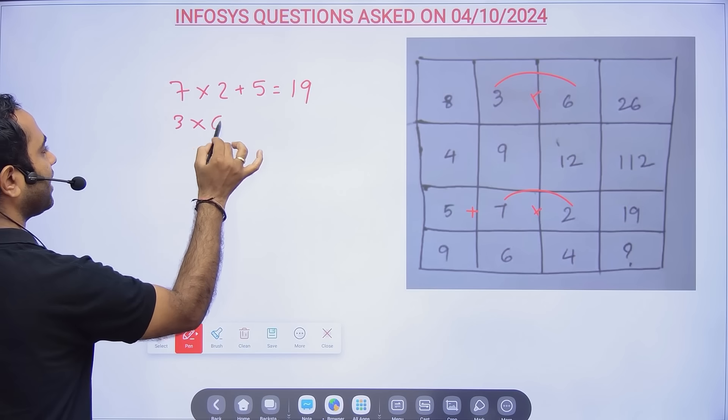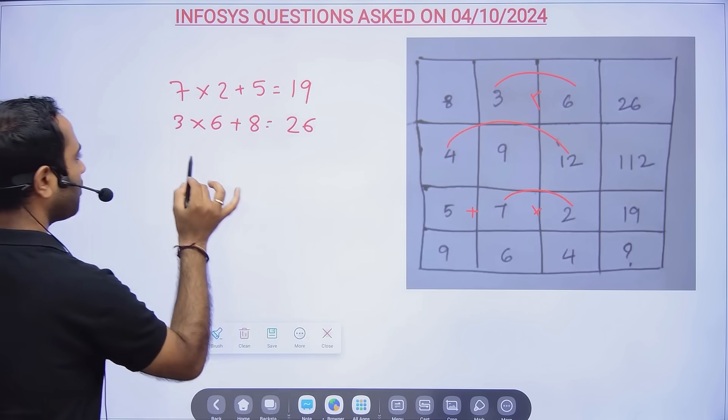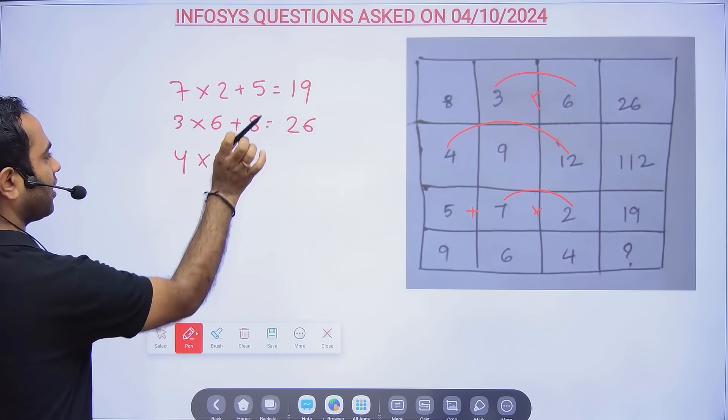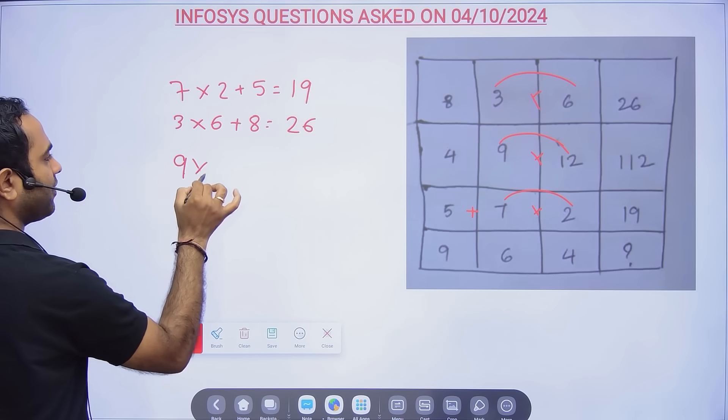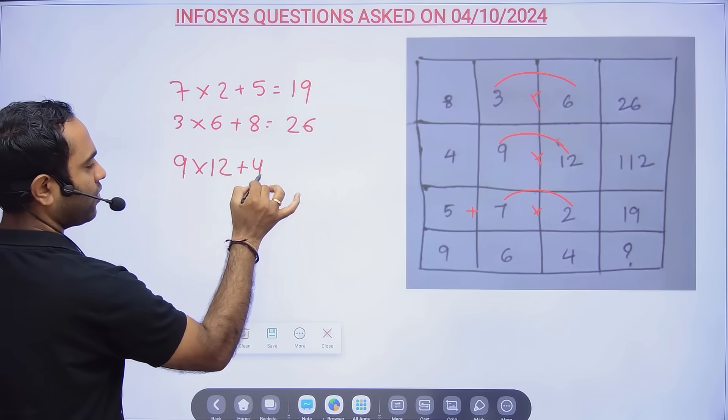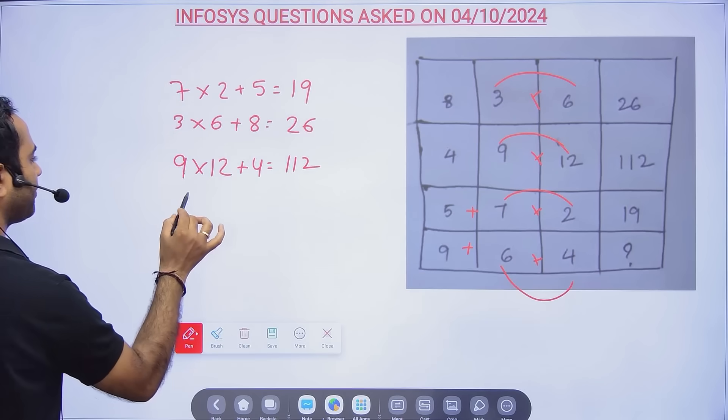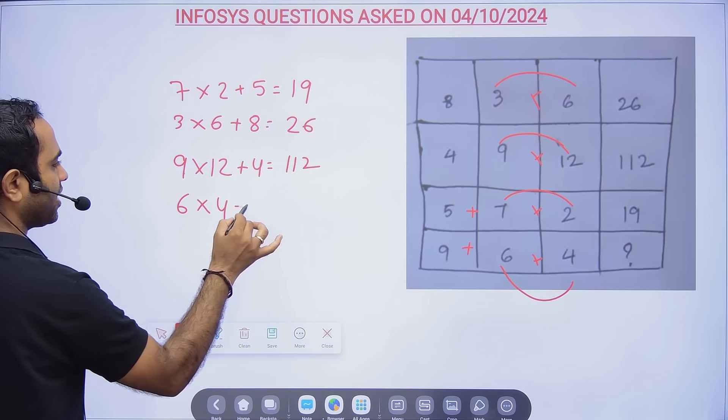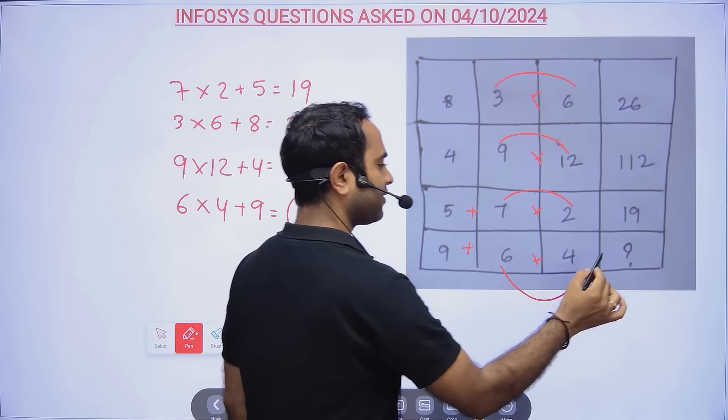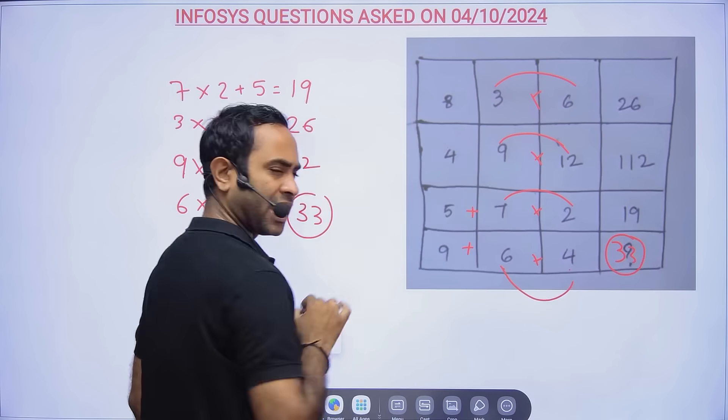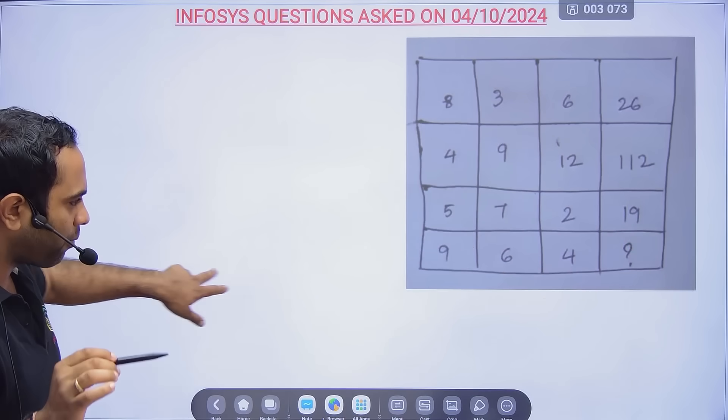3 × 6 = 18, plus 8 = 26. Then 9 × 12 = 108, plus 4 = 112. So here 6 × 4 plus 9: 6 × 4 = 24, plus 9 = 33. So the answer will be 33.